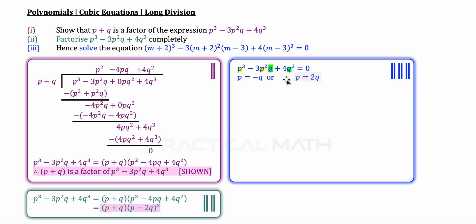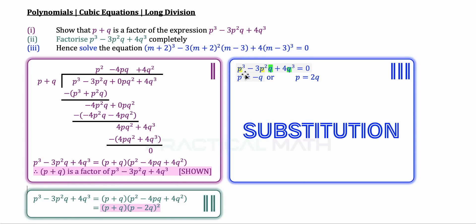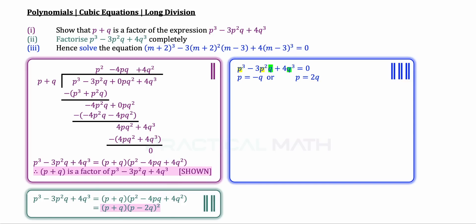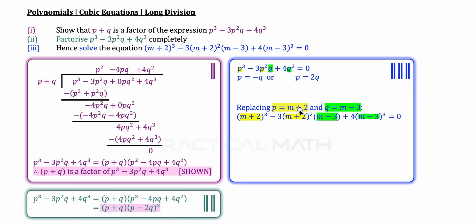Now, we can see that the equation in part 3 is in a form similar to the cubic expression. Using substitution — replacing p with n plus 2 and q with n minus 3 — we do indeed get the form of part 3's equation. Let us verify: substituting p as n plus 2 (highlighted in yellow) and q as n minus 3 into the expression confirms it matches exactly the equation given in the question.